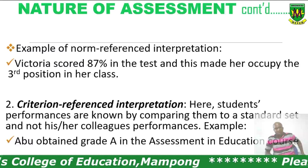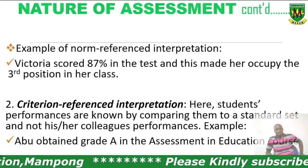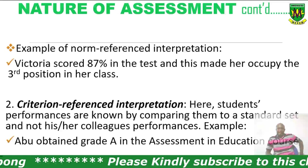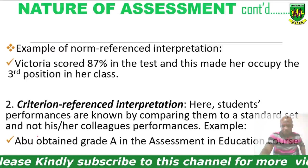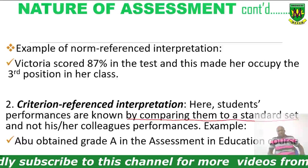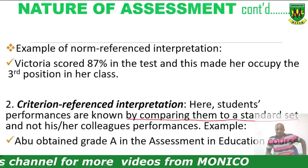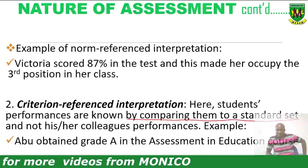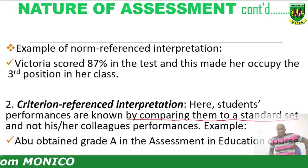Criterion-referenced interpretation is the exact opposite of norm-referenced interpretation. Here we don't compare students' performance with the norm group — the colleagues who wrote the test — but rather the performance is compared to a criterion or standard. For example, if the standard is that anybody who scores 80 will be awarded an A, then since Victoria scored 87, she will receive an A. That A doesn't mean she performed better than anybody. So the clear difference is: norm-referenced involves comparison with others, while criterion-referenced involves no such comparison — only comparison to a set standard.